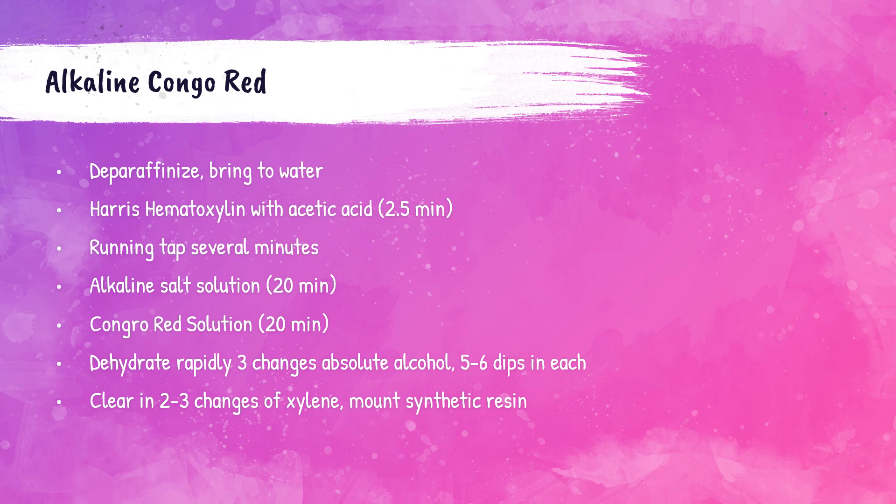After the alkaline salt solution and Congo red solution steps, dehydrate rapidly using three changes of absolute alcohol, with five to six dips in each change. Then clear in two to three changes of xylene and mount with synthetic resin.